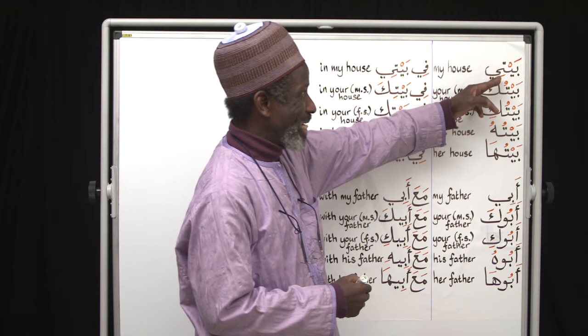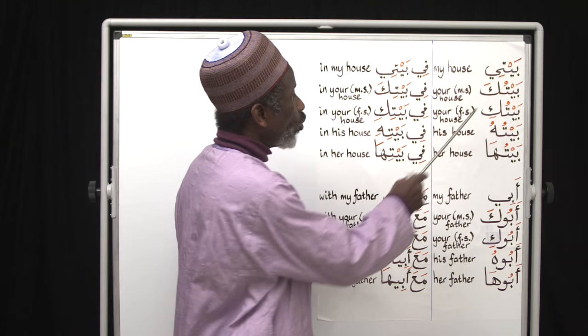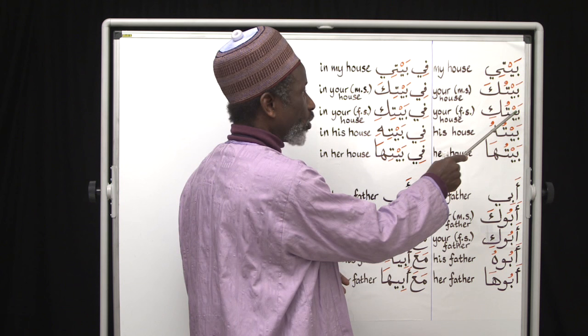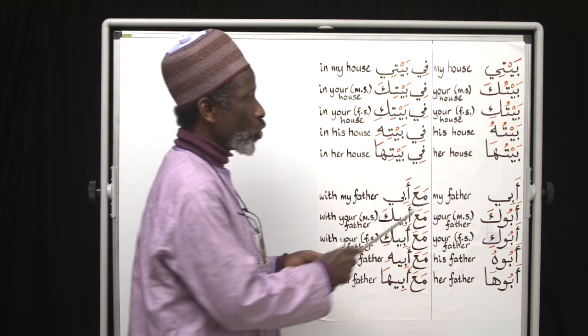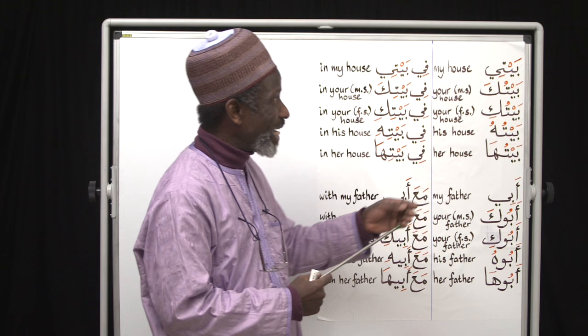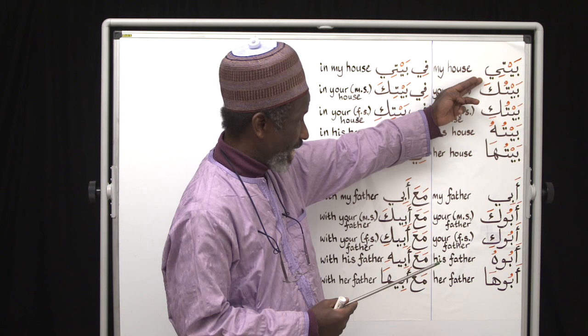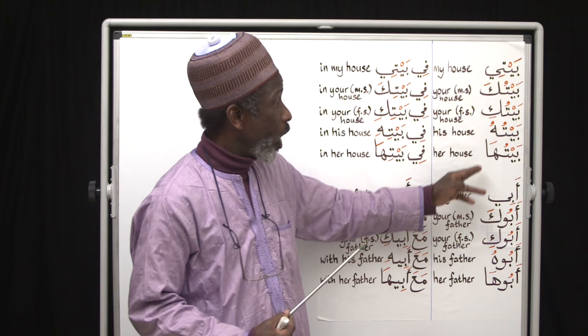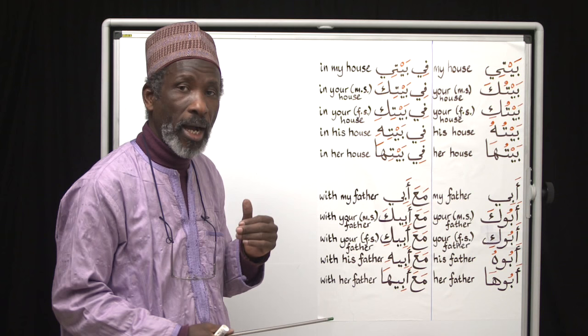You know baitun — baitun is a house. Baiti means my house. Baituka means your house, talking to a single man. Baituki means your house for a feminine singular. Baituhu means his house, and baituha means her house. We know the possessive endings for singulars: the 'i' ending for 'I', then ka, ki, hu, ha.